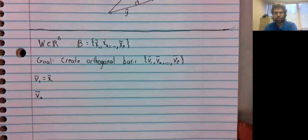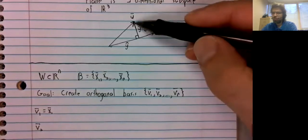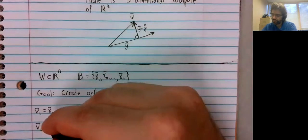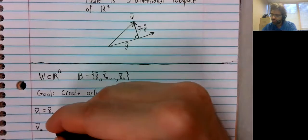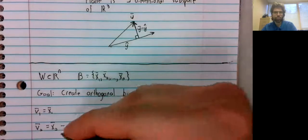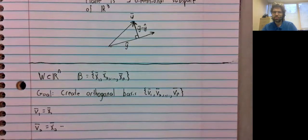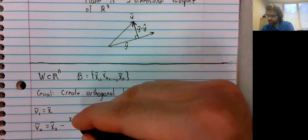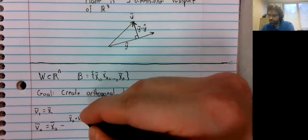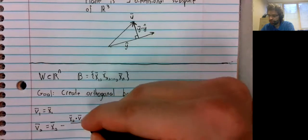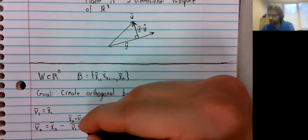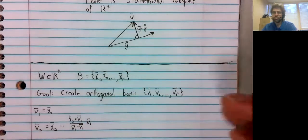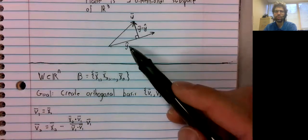As for V2, we'll now do our projection. So it's x2 minus the projection on V1. And again, that's exactly what happened up here.